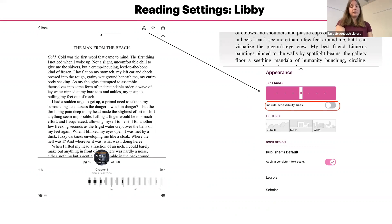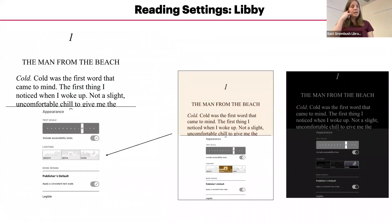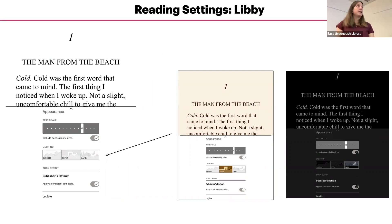You can slide the bar left or right to increase or decrease the text size. If you would like an even bigger text, check the little accessibility option right underneath, and that will give you even more text size options. Lighting will change the background color and text color. Bright is the default — a white background with black text. Sepia is tan colored, and dark is a black background with white text, so you can choose whatever works best for you.